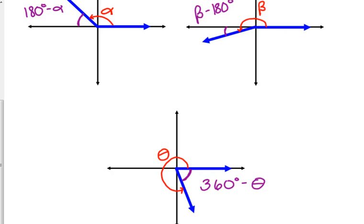If we were in radians, instead of 180 we would use pi, and here we would use two pi instead of 360. Just like when we add and subtract with coterminals, you're adding or subtracting in the same way — just using pi and two pi. It may look a little overwhelming right now, but let's look at some examples to settle it in our minds.